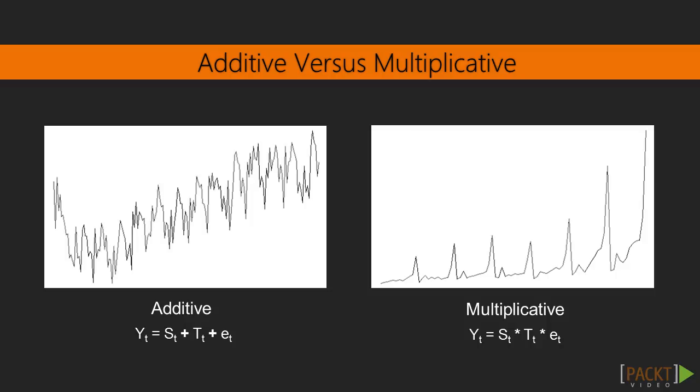But for multiplicative time series, it is the product of the three. You can identify this based on how the pattern varies. This is best decided visually by looking at the time series.